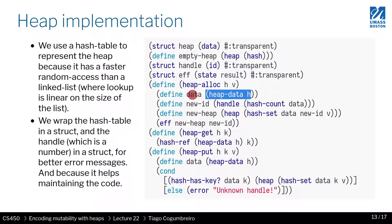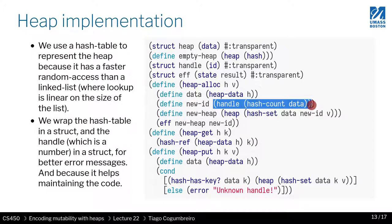Then we create the new handle, and the new handle is created by just counting how many elements you have in the hash table. So if your hash table is empty, the first handle will be zero.